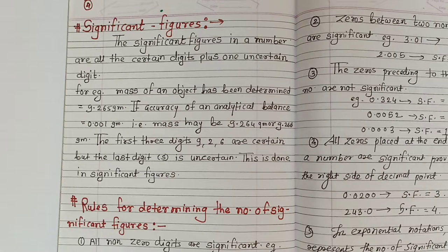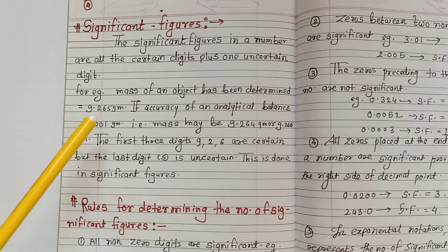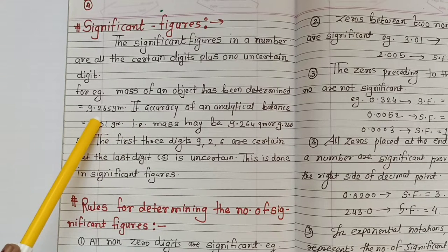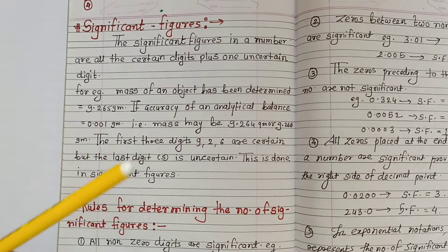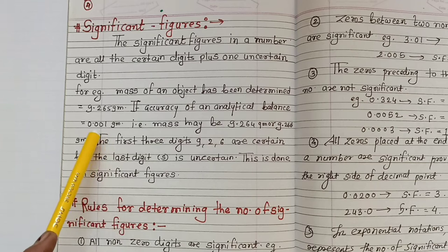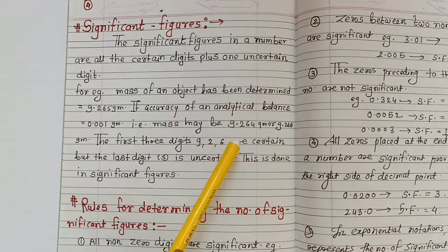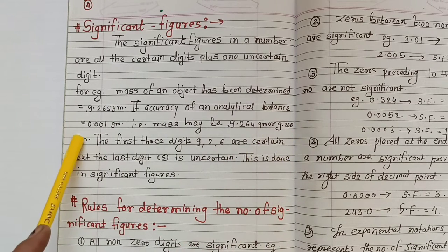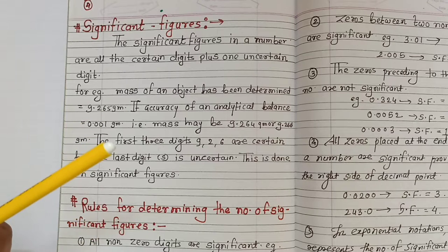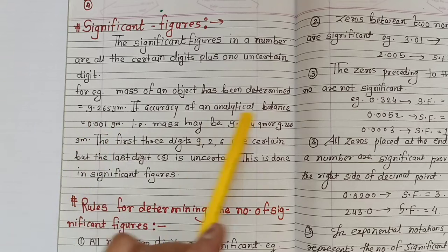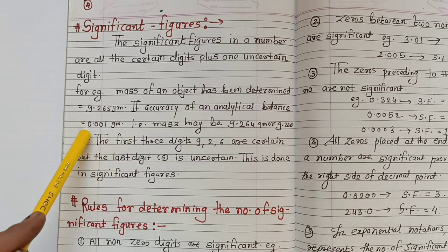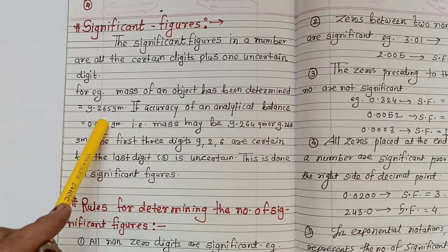Let's take an example. Suppose there is an object whose mass has come out to be 9.265 gram. So its mass is accurately 9.265 gram. And the accuracy of the analytical balance on which it was weighed is 0.001 gram. This means the mass may be 9.264 gram or it may be 9.266 gram — that is, plus 0.001 or minus 0.001.